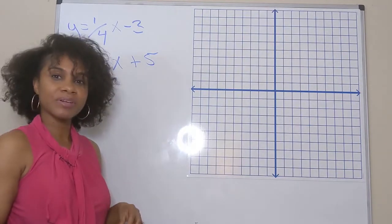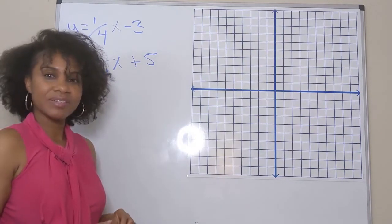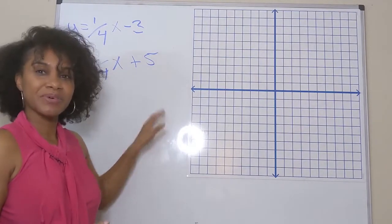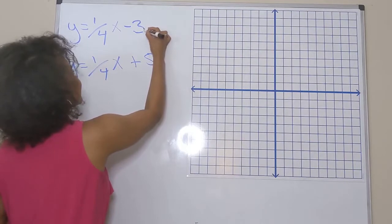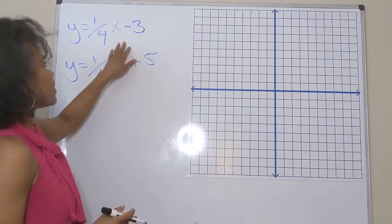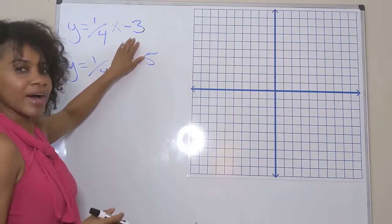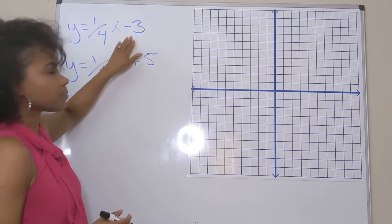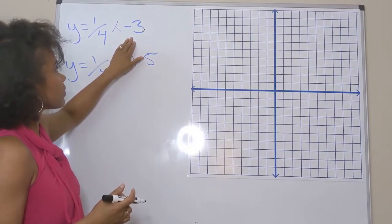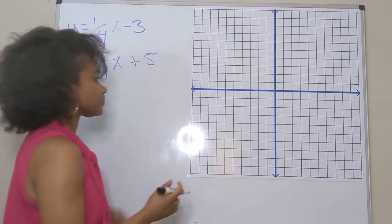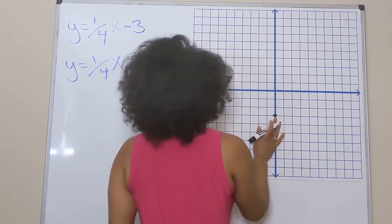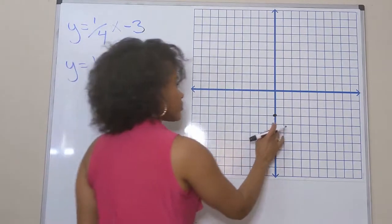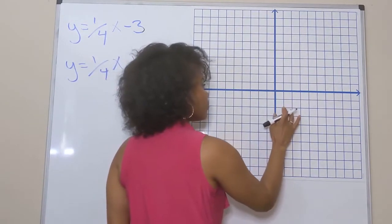Let's go ahead and solve this system of equations by graphing. In slope-intercept form, negative three is my y-intercept and one-fourth is my slope. So my y-intercept for the first equation is at negative three on my y-axis. My slope is one-fourth, so from that point I go up one and over four.